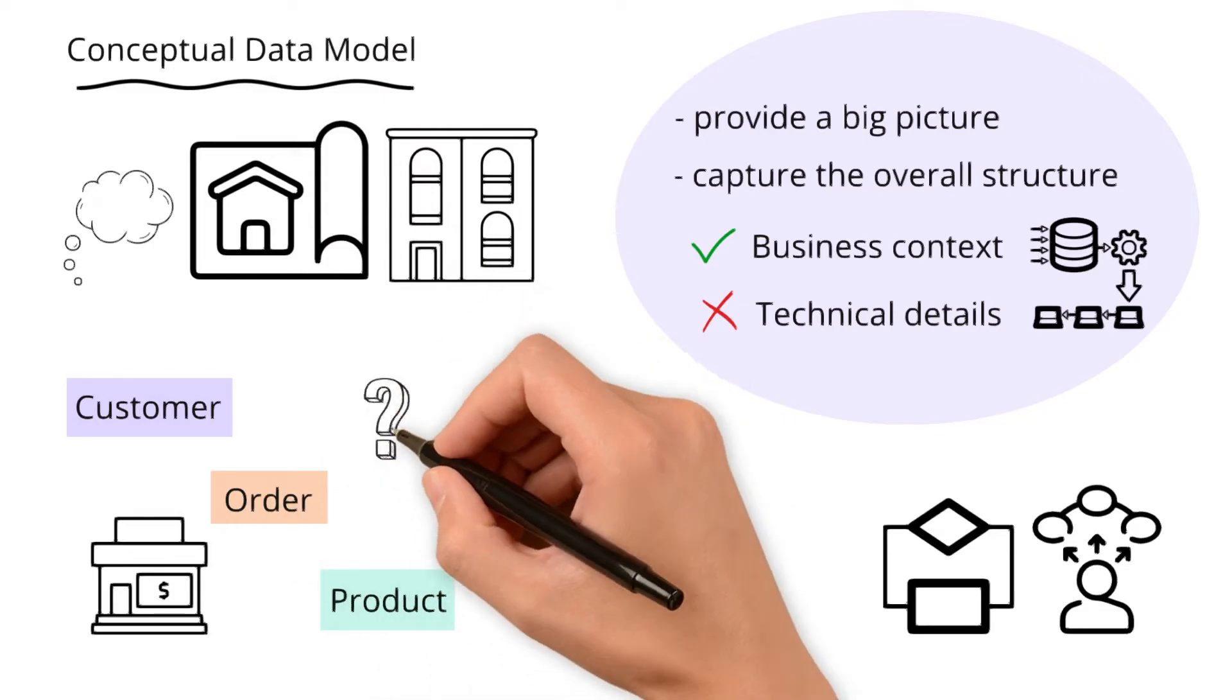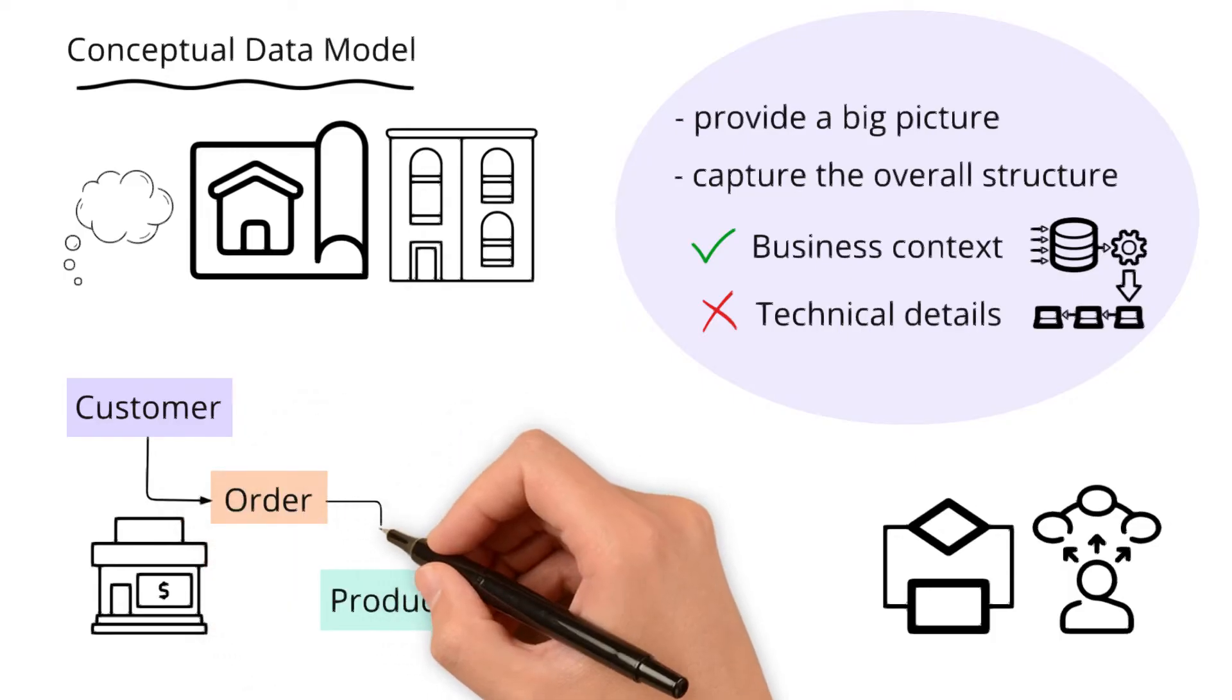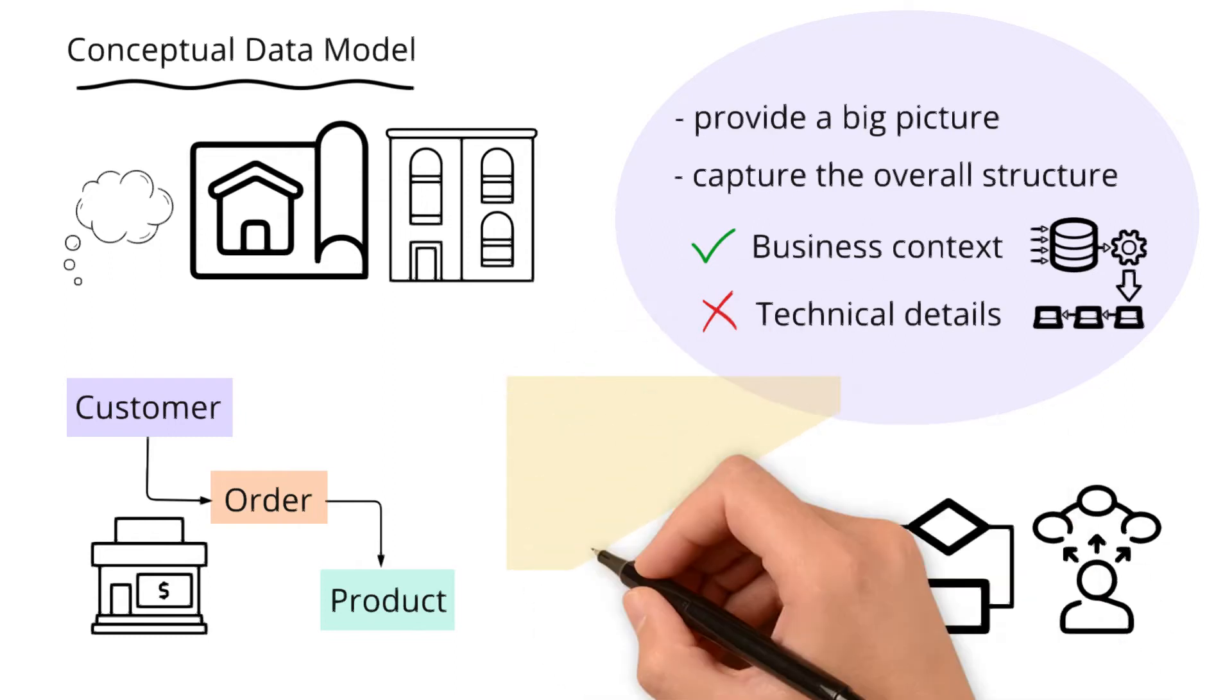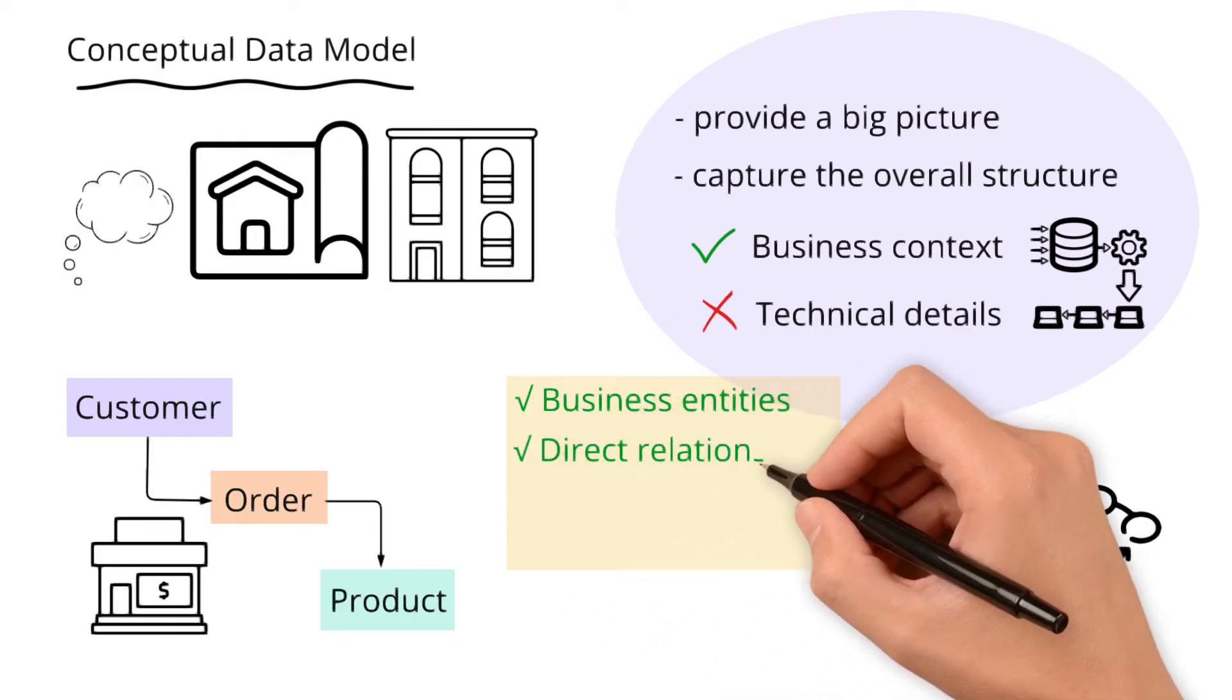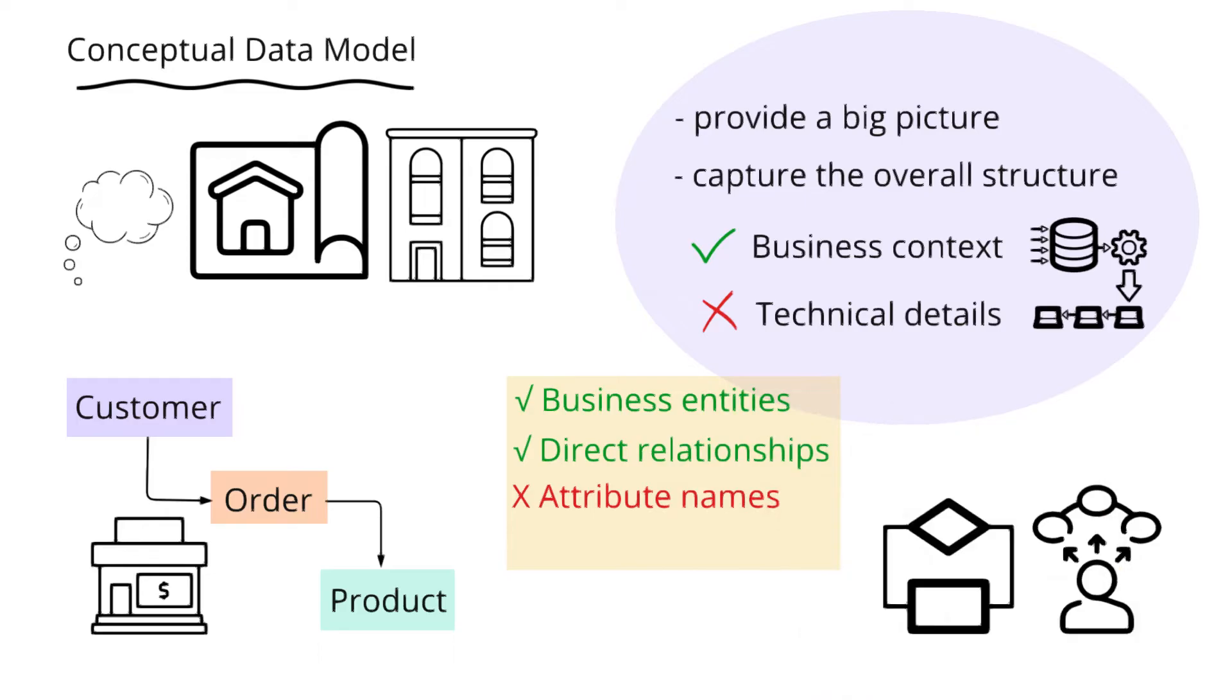How do they relate? Customers place orders, and orders contain products. If you notice, the focus is on high-level business entities and their direct relationships, but not on the details like their attribute names and their data types.